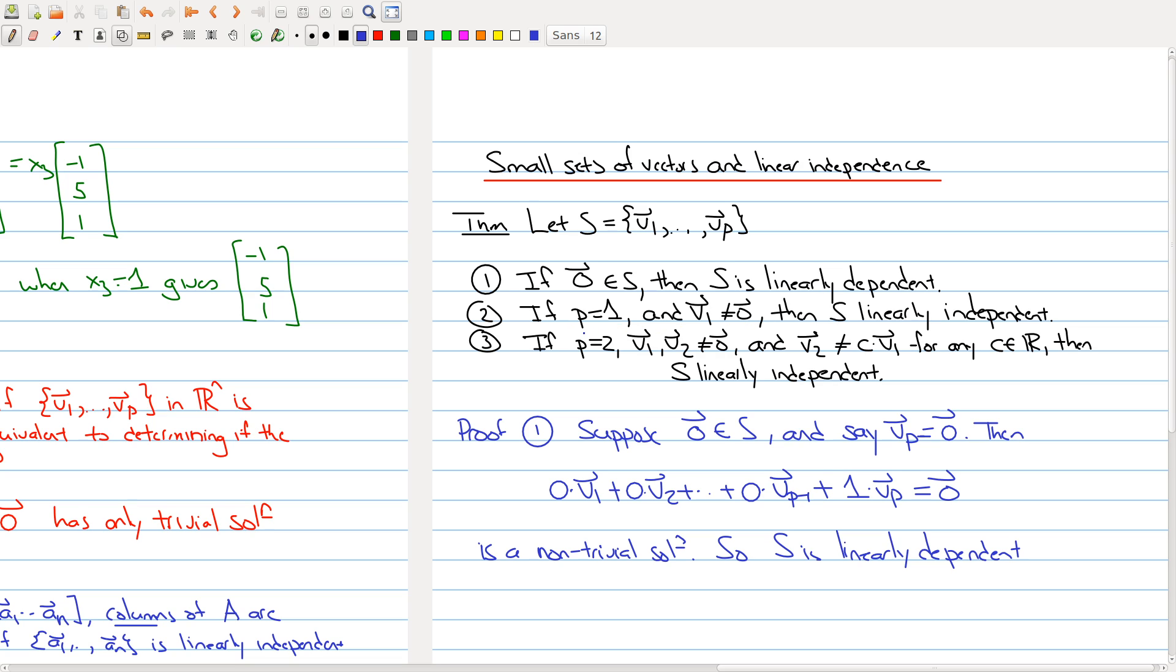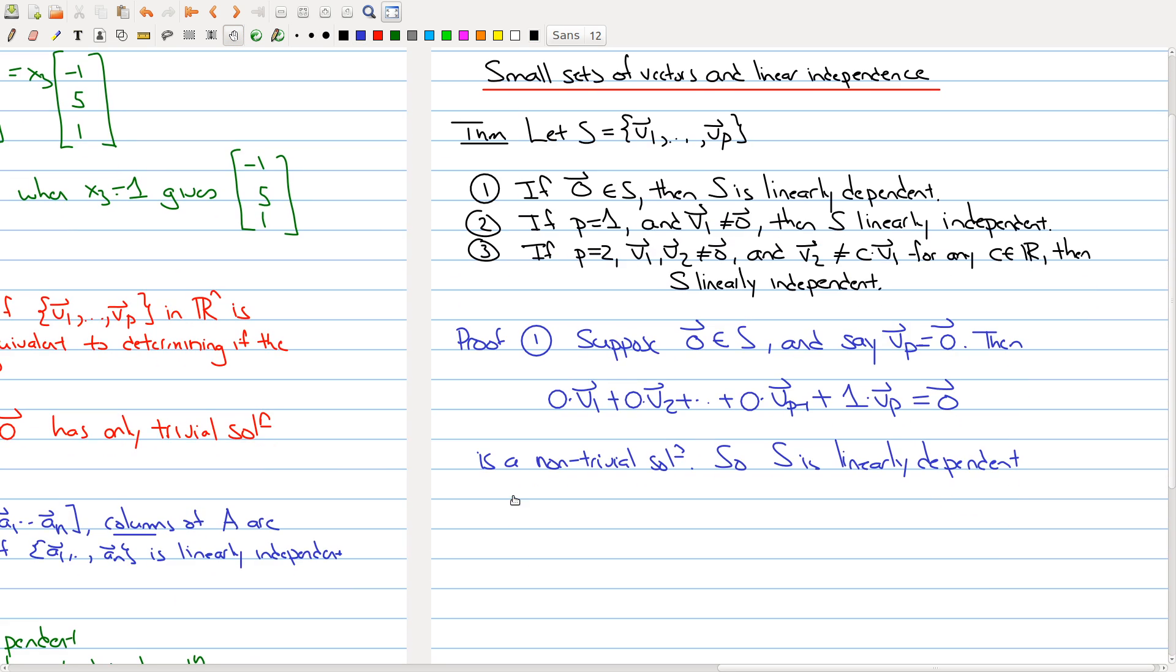If it's the zero vector, part one kicks in and we know it's linearly dependent. But let's say it isn't the zero vector. You have one vector and it's not the zero vector. Statement two says that that set is automatically linearly independent. Let's prove why that's true. If S contains only a single vector,